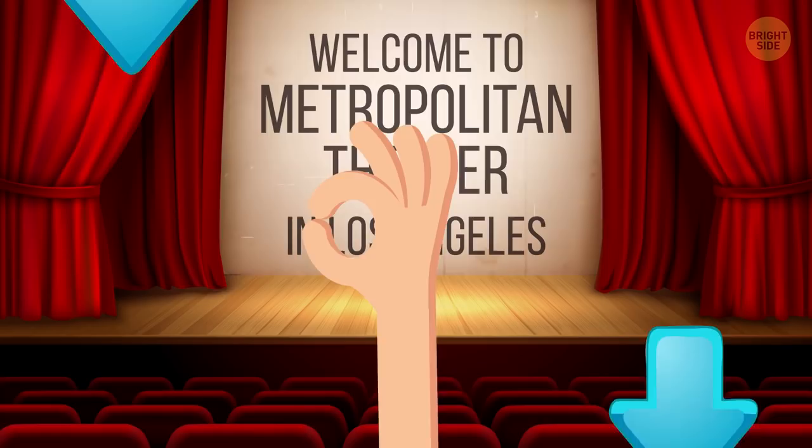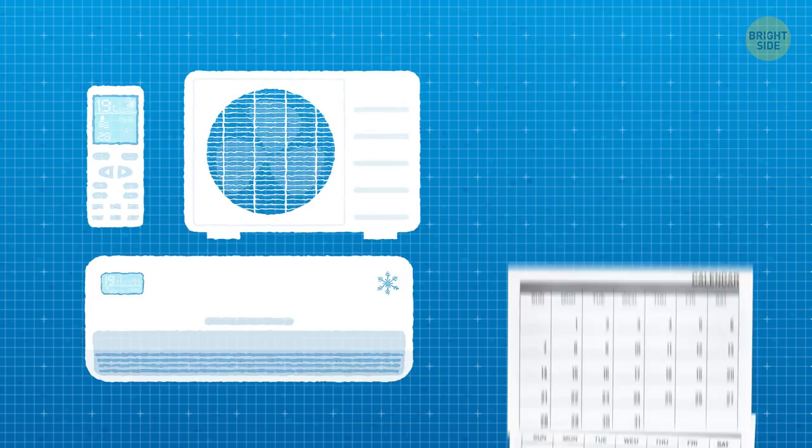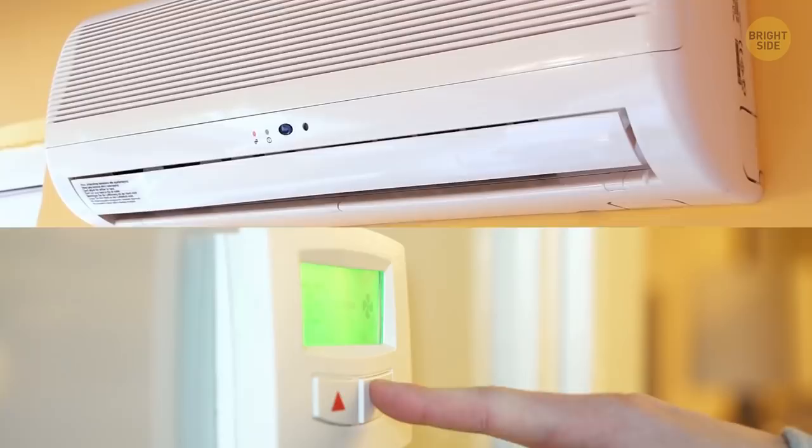It was good enough for public buildings, but still too large and expensive for homes. It took a couple more decades for engineers to design something perfect for private houses. By 1947, they sold 43,000 systems, and now the AC is present in hundreds of millions of homes across the world.